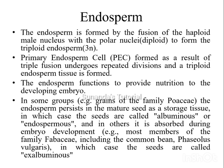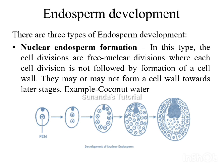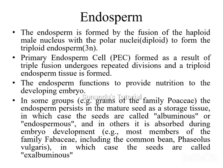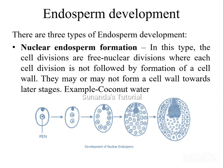Endosperm is formed by the fusion of a haploid male gamete with the polar nuclei, which is diploid and present at the center of the embryo sac. The haploid male gamete fused with the diploid polar nuclei forms a triploid primary endosperm nucleus, which undergoes repeated mitotic division to form endosperm. The main role of endosperm is to provide nutrition to the developing embryo. In some families like Poaceae, the endosperm persists in the mature seed as a storage tissue; such seeds are called albuminous or endospermous. In others, like Phaseolus bean, it is totally absorbed during embryo development, and those seeds are called ex-albuminous.